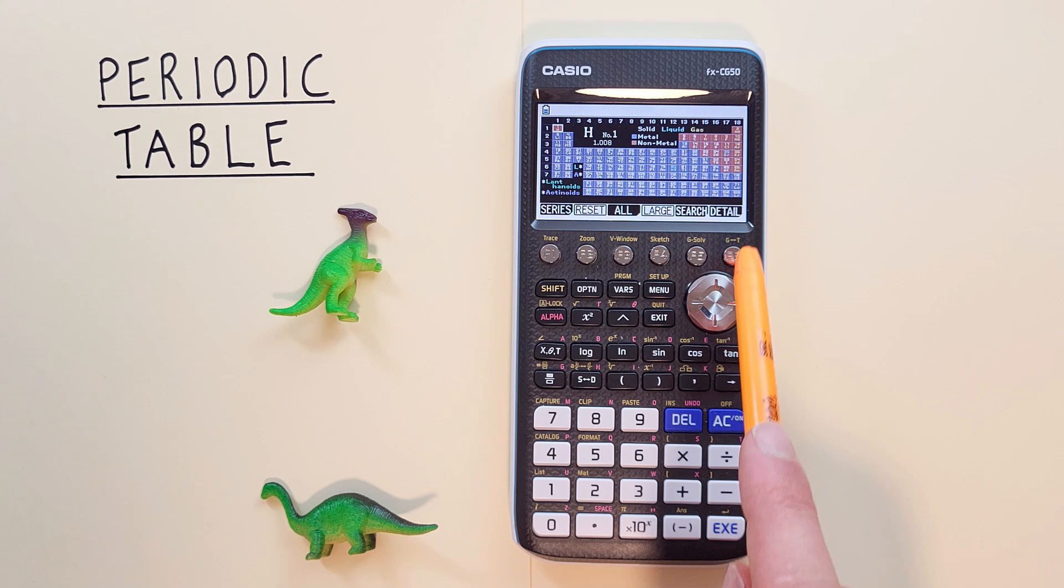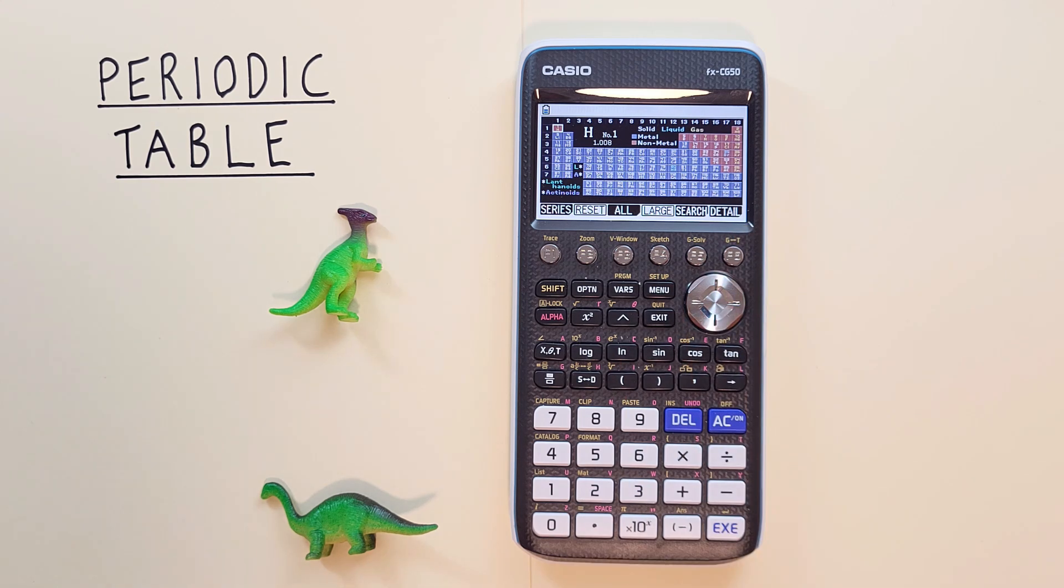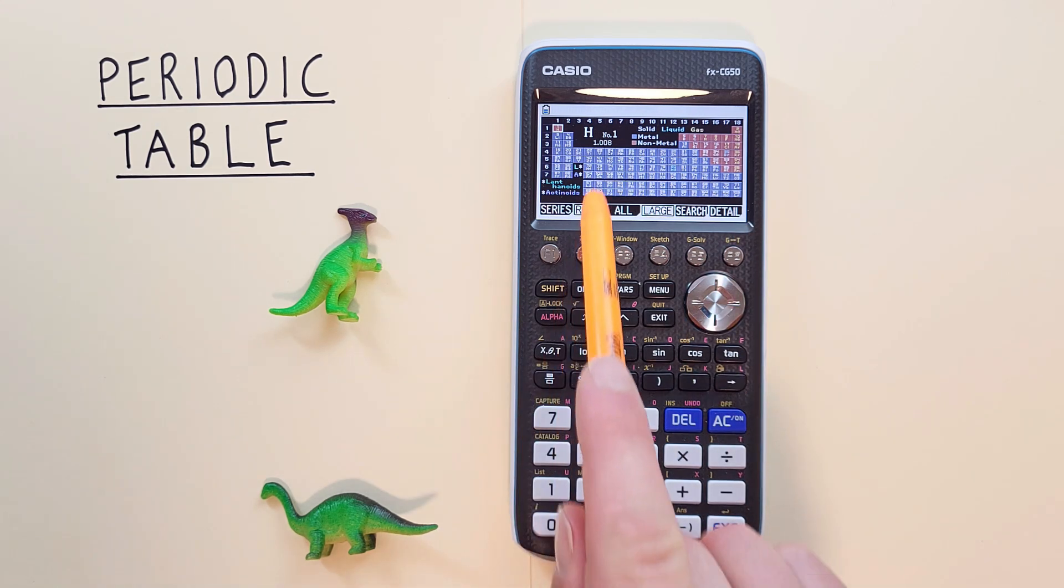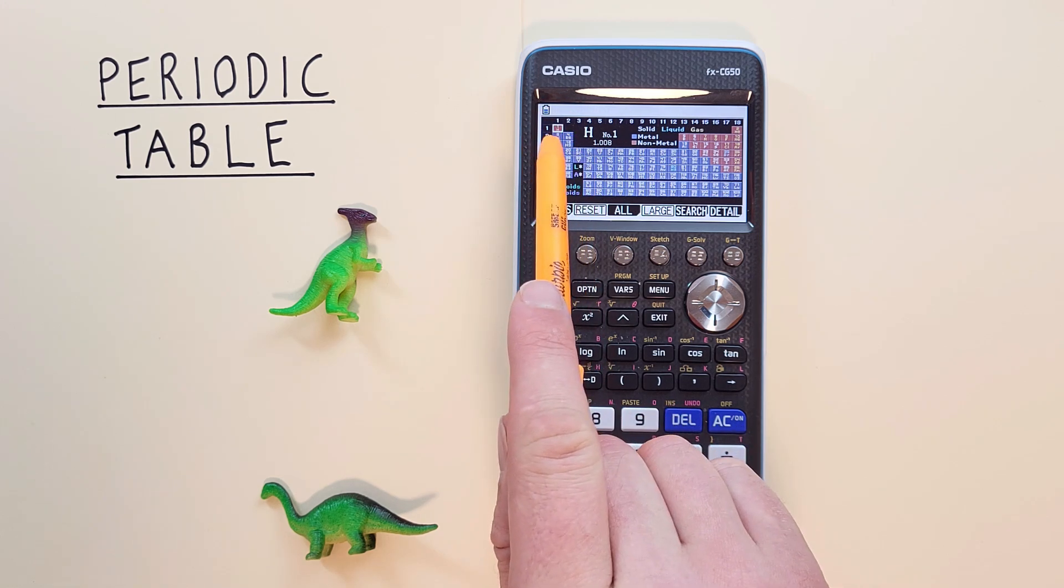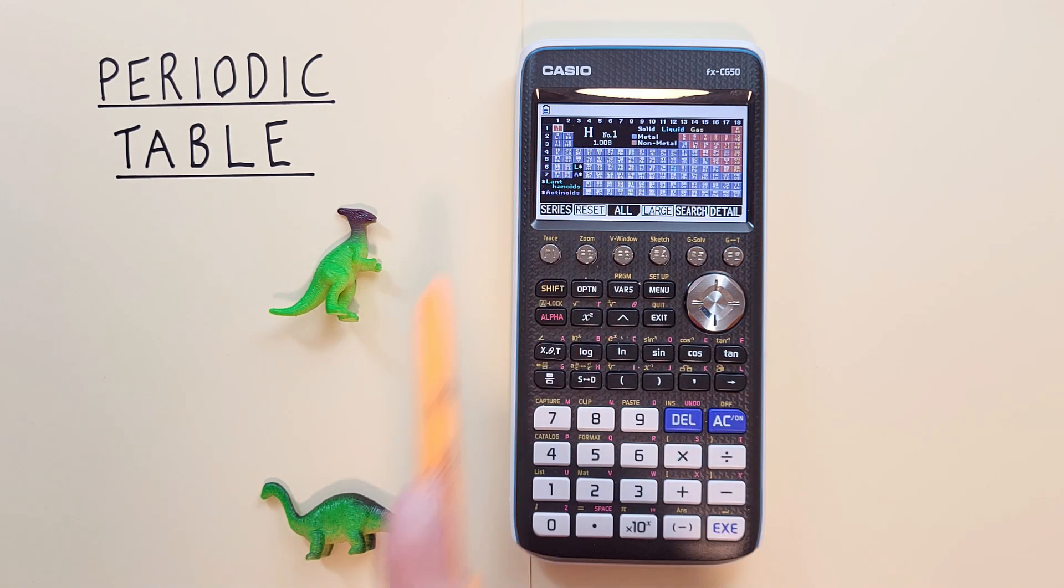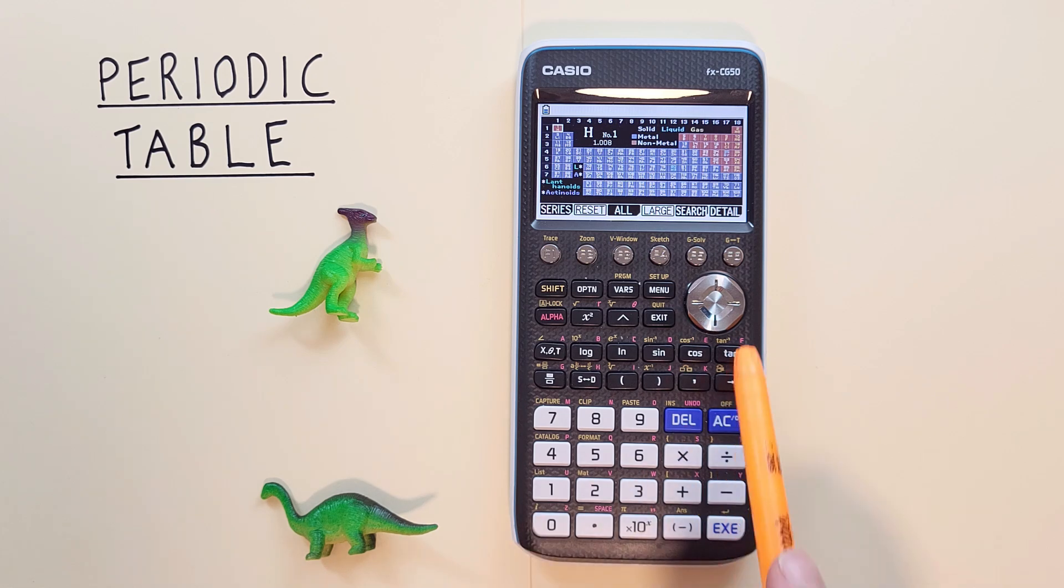And there we go. It brings up our periodic table of elements. You can see our highlighted square here in 1 is H. And we can scroll around on our table to highlight different elements.